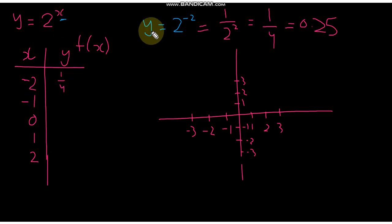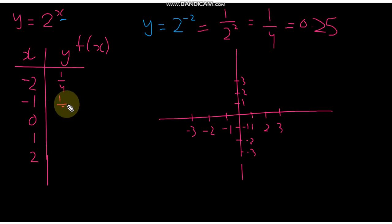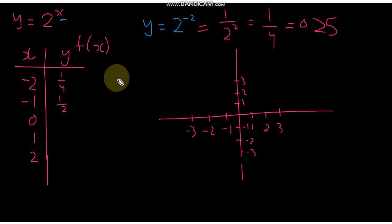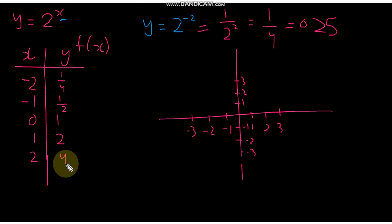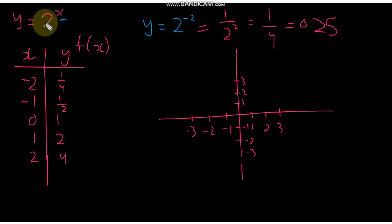Similarly, if x = −1, you get y = 1/2. If x = 0, anything to the power of 0 equals 1, as we studied in the first lesson. For x = 1, y = 2, and for x = 2, y = 4.